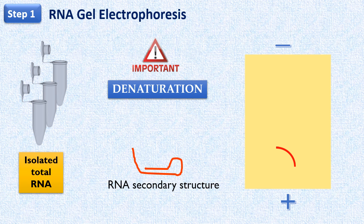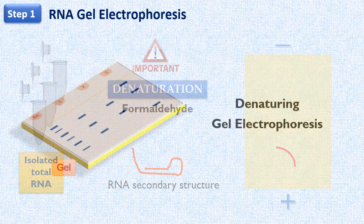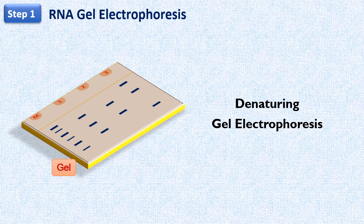So, if we want to separate them on the basis of their molecular weights, we need them to bring in the linear shape. Otherwise, the secondary structures of RNA molecules will affect their electrophoretic mobility during gel electrophoresis. So, to denature RNA, formaldehyde is used as a denaturing agent. Thus, denaturing gel electrophoresis is used in this step.